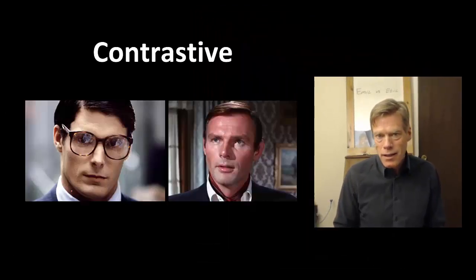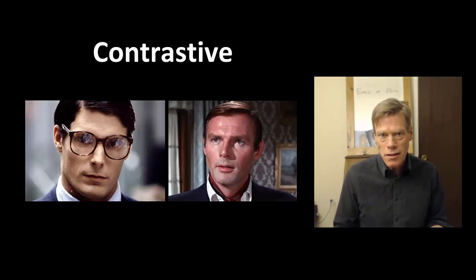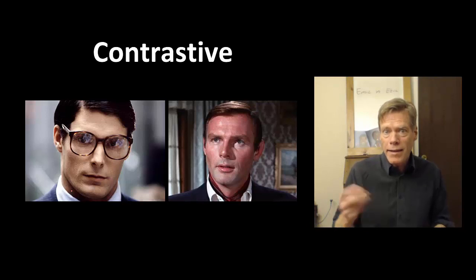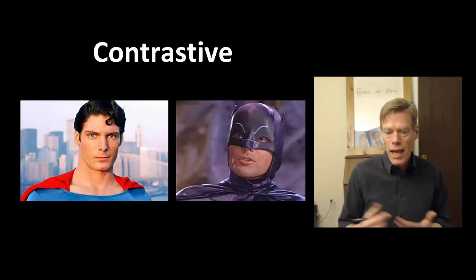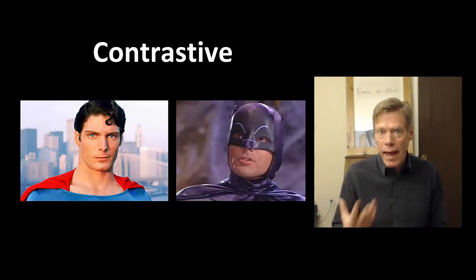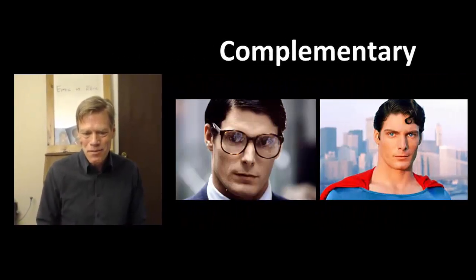Now, the way I like to think about it is through superheroes. So let's think about Clark Kent with the glasses, right, versus Bruce Wayne, you know, billionaire playboy. They're in contrastive distribution, meaning that we can find them in the same place at the same time, and we know that they are two different distinct individuals. In other words, their faces mean different things to us. And likewise, Superman and Batman are in contrastive distribution. They can be in the same place at the same time, and they mean different things.